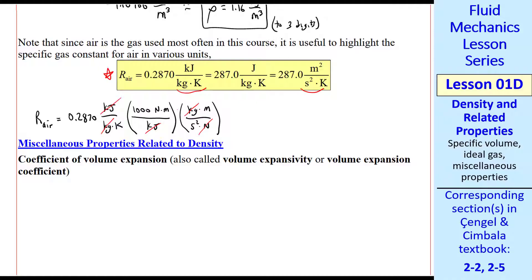That gets rid of kilograms and newtons. We end up with meters squared over seconds squared K. Or 287.0 meters squared per second squared K as our answer. Verifying this.